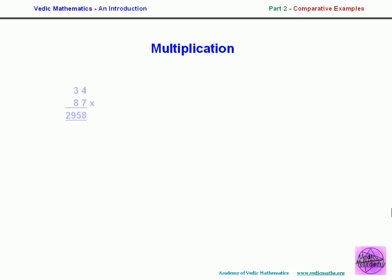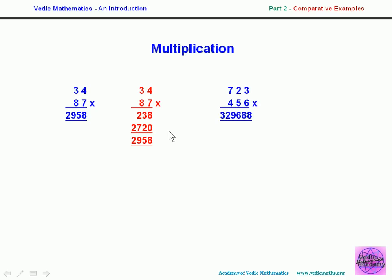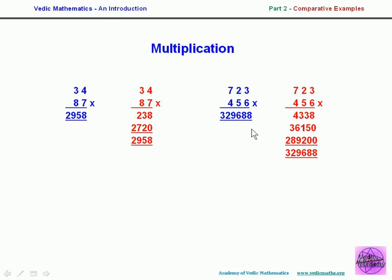For multiplication, in the Vedic system we can multiply numbers in one line from right to left or from left to right using a simple pattern. The conventional method requires obtaining two or more partial lines and adding them up, remembering to place zeros correctly. The Vedic method is extendable to numbers of any size, and you can get the answer in one line — a striking contrast with the conventional method.